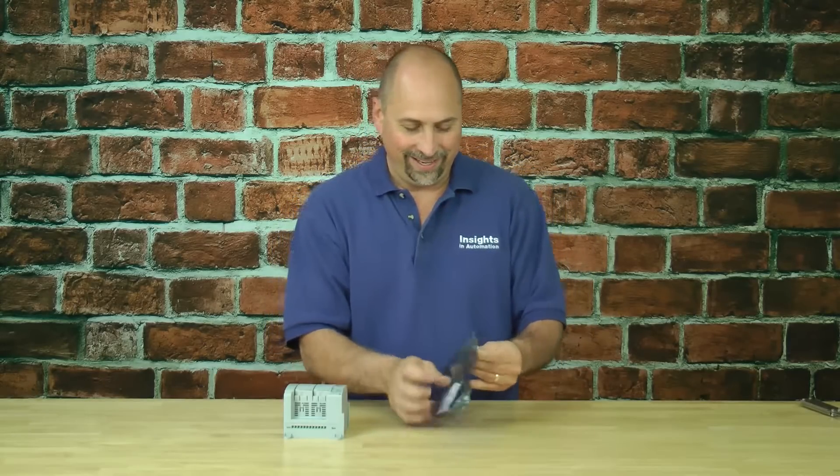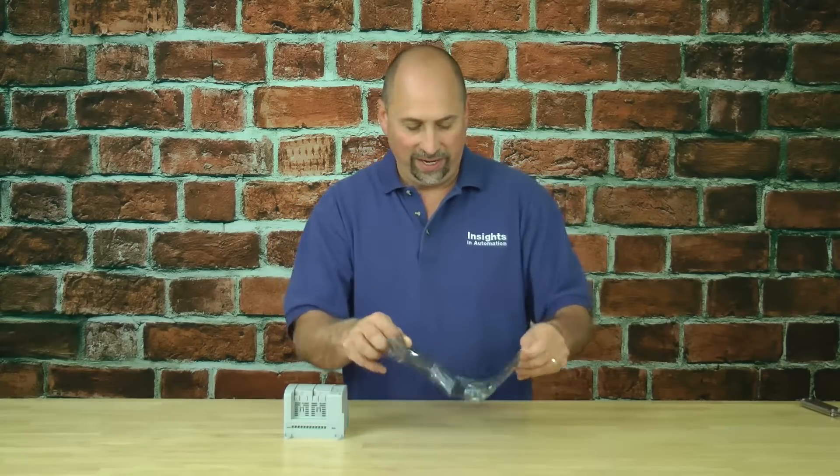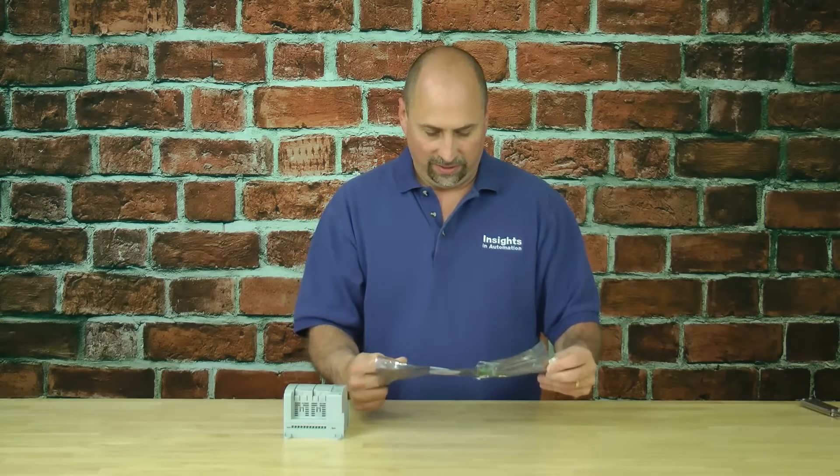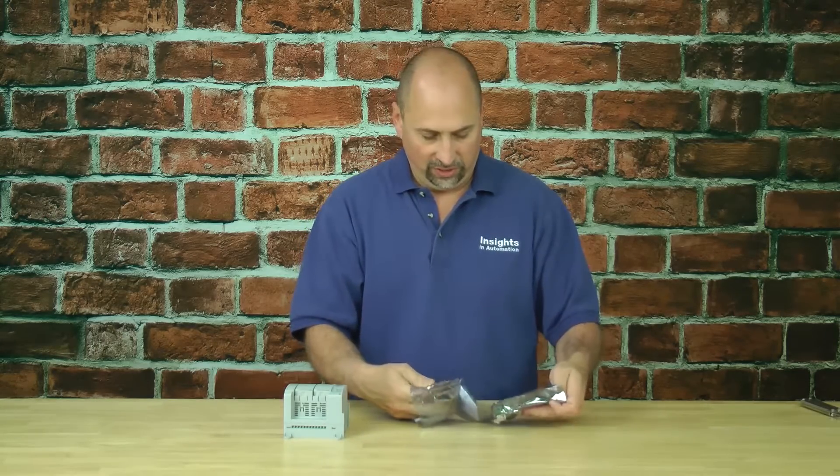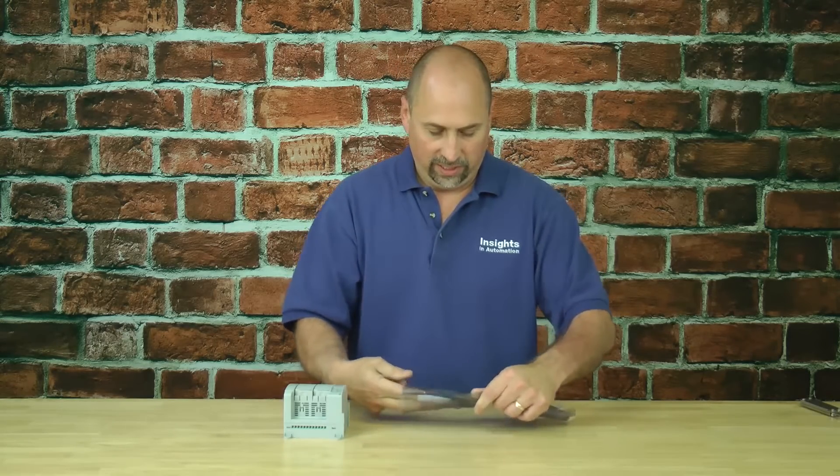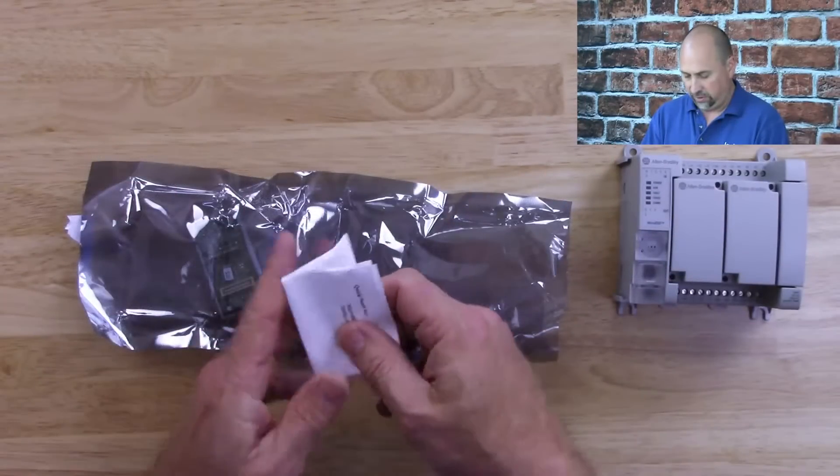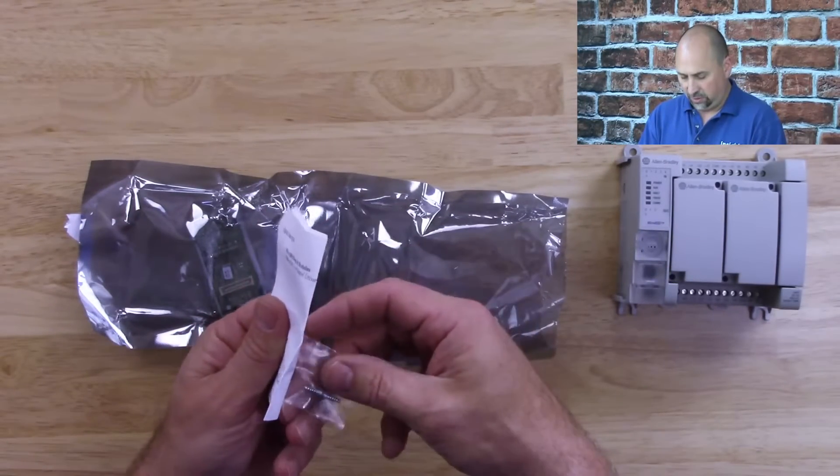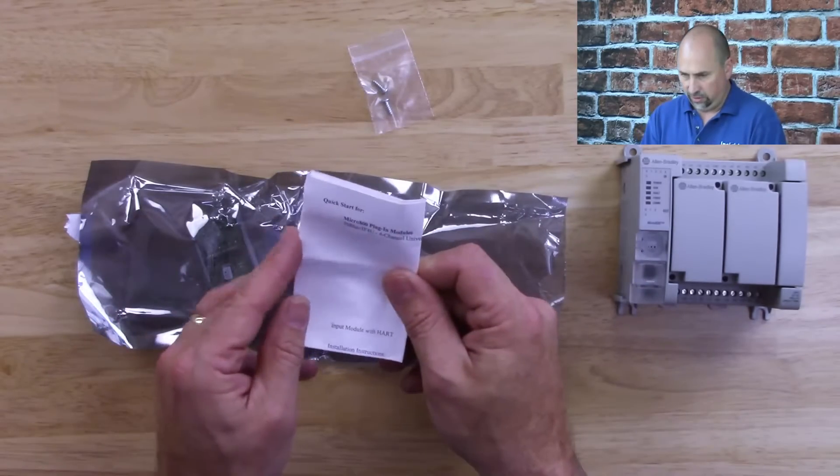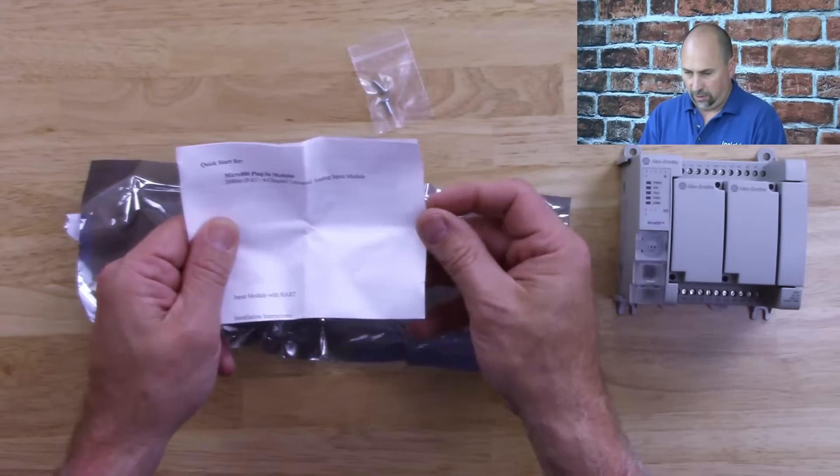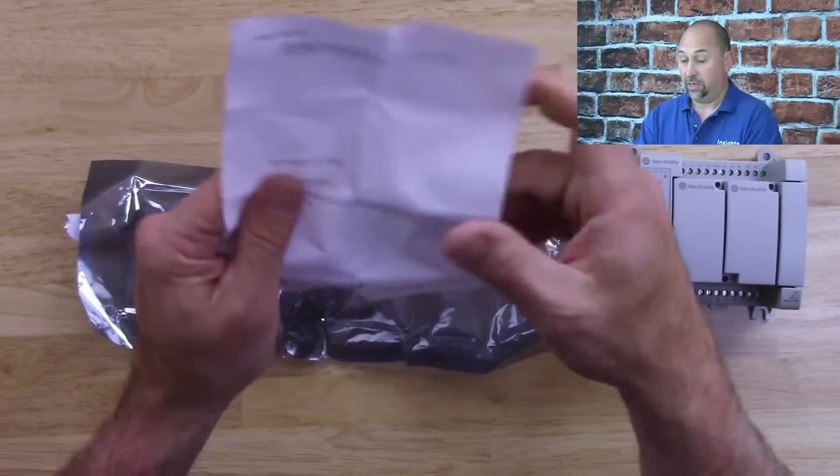Let's see if we can get her out of this bag. Interesting. Holds on each side. Take out these instructions first. This says it's a quick start. There's a couple screws there. And let's take a look at this quick start and see what she says.